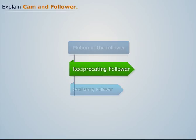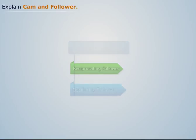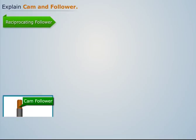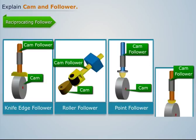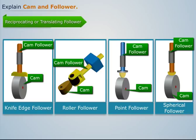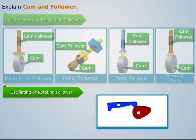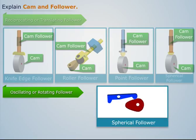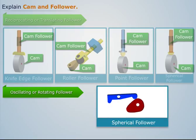On the basis of motion of the follower, followers can be classified as reciprocating follower and oscillating follower. When the follower reciprocates in a guide due to the uniform rotary motion of the cam, it is called a reciprocating or translating follower. When the follower oscillates in a predetermined direction due to the uniform rotary motion of the cam, it is called an oscillating or rotating follower.